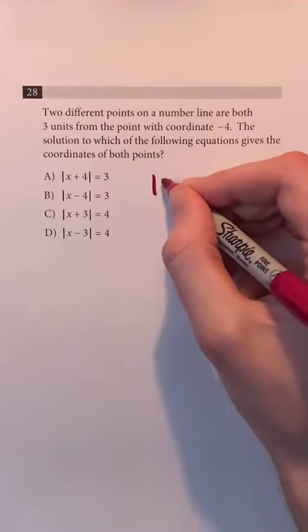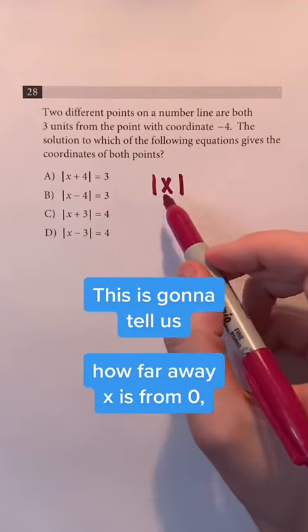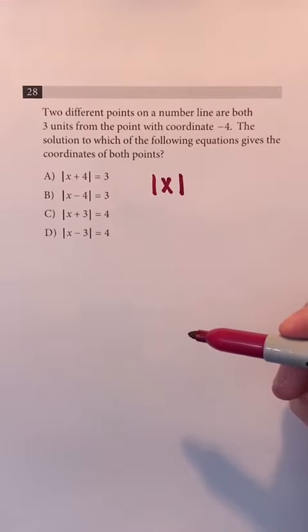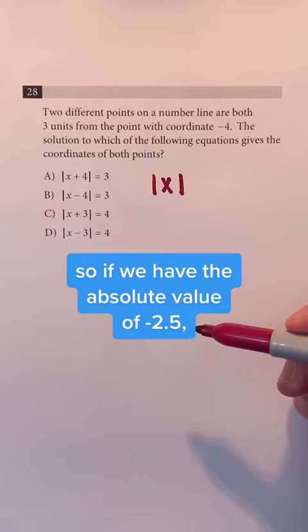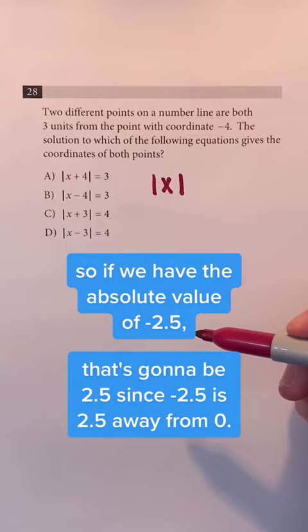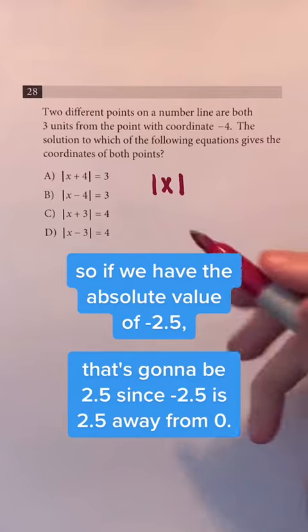Let's say that we have the absolute value of x. This is going to tell us how far away x is from zero. So if we have the absolute value of negative 2.5, that's going to be 2.5 since negative 2.5 is 2.5 away from zero.